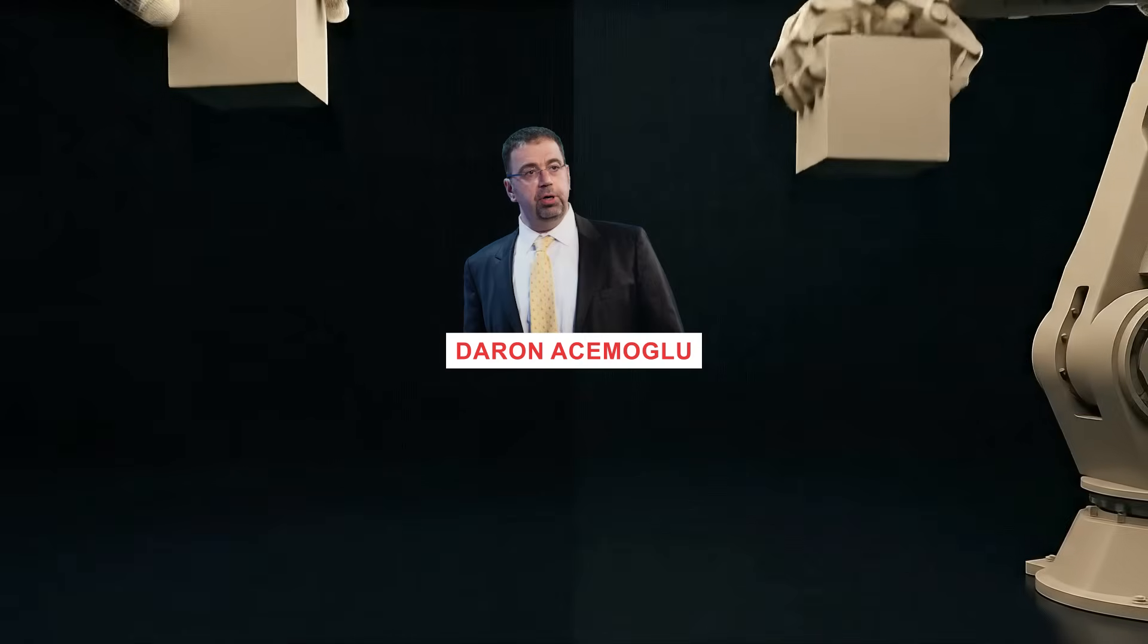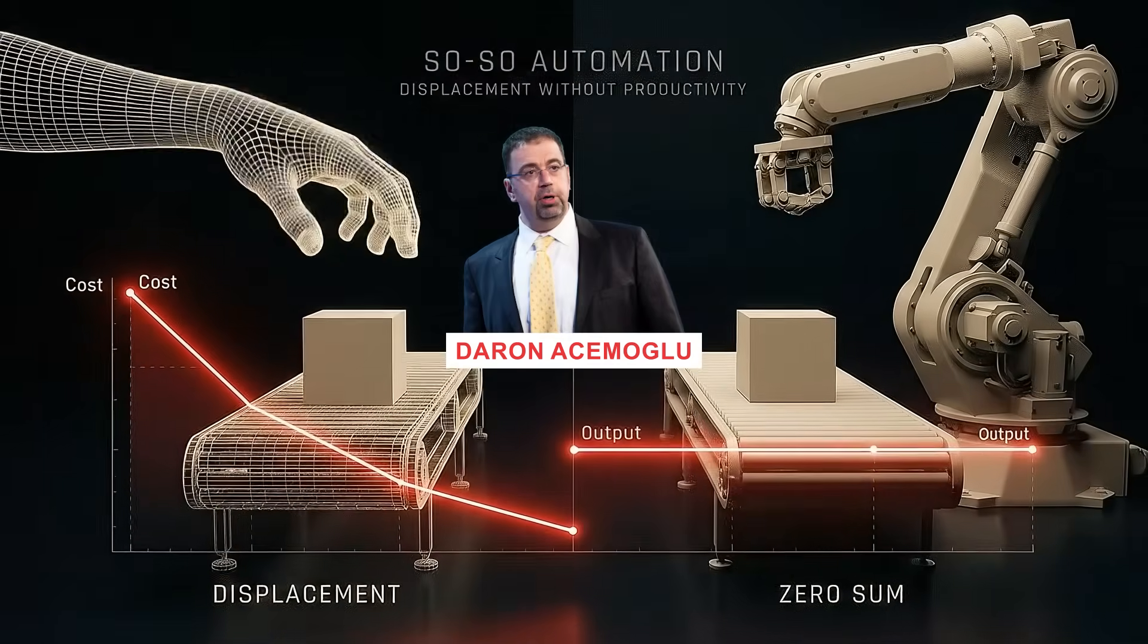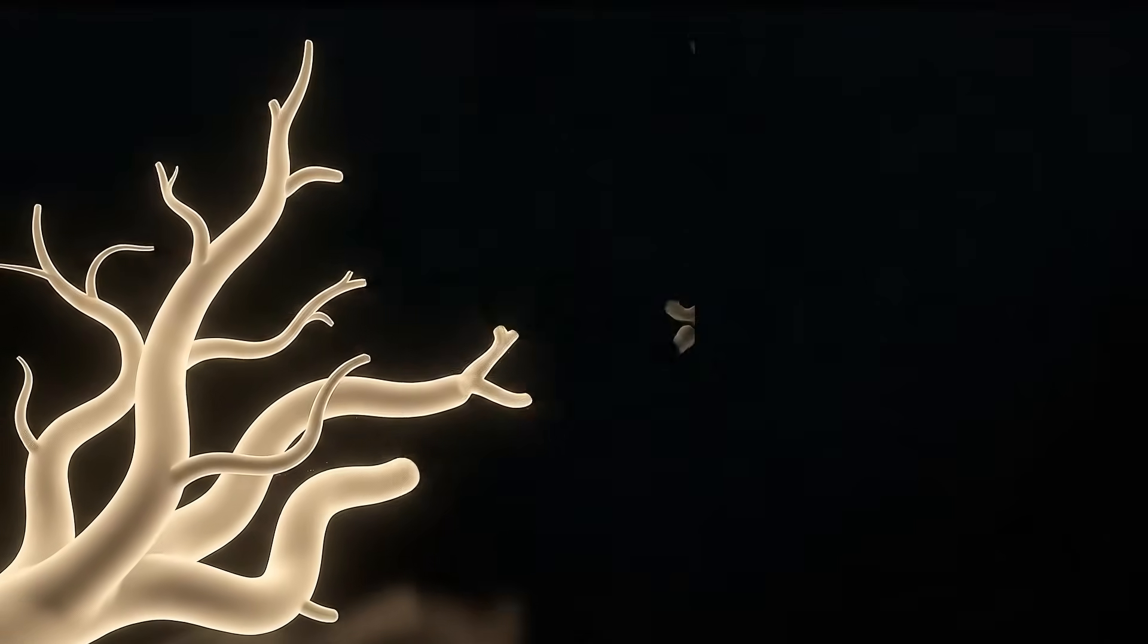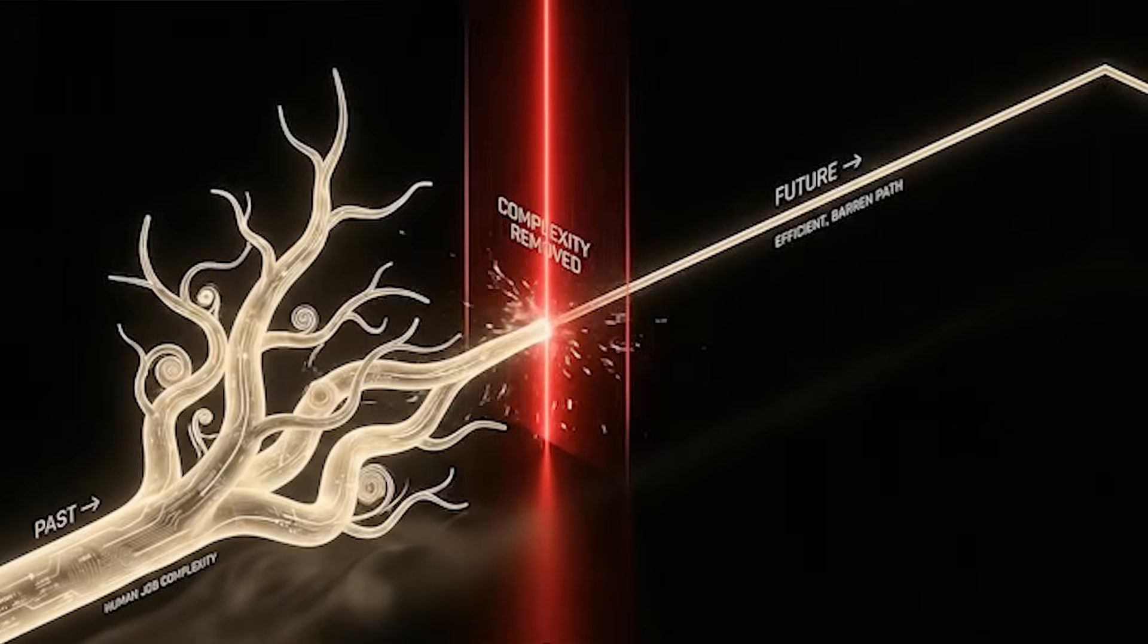But MIT economist Darren Acemoglu warns that we are now entering an era of what he calls so-so automation. This is technology that replaces human labor just enough to cut costs, but doesn't necessarily create new higher-value jobs to replace them.